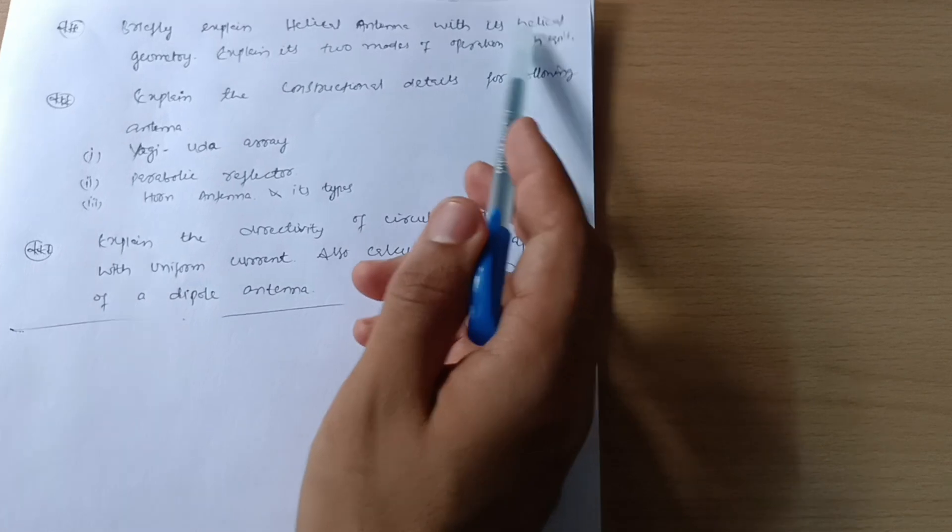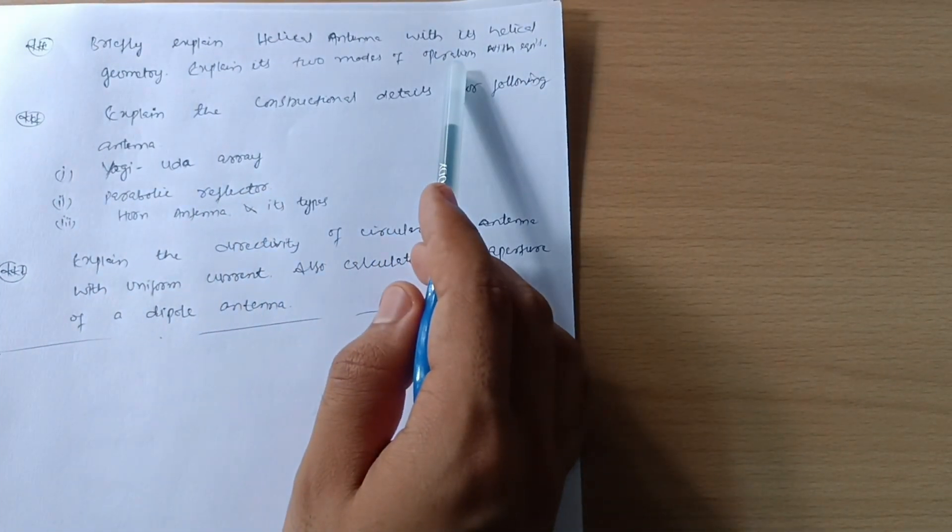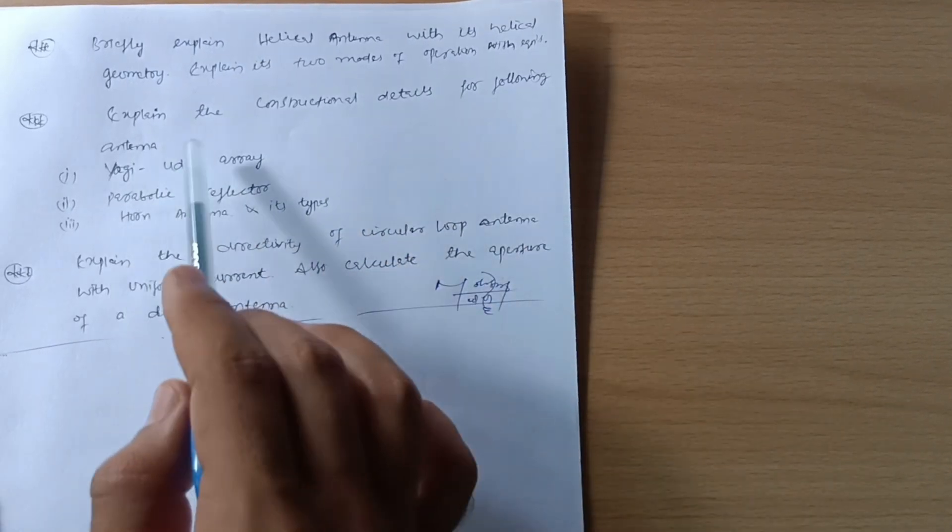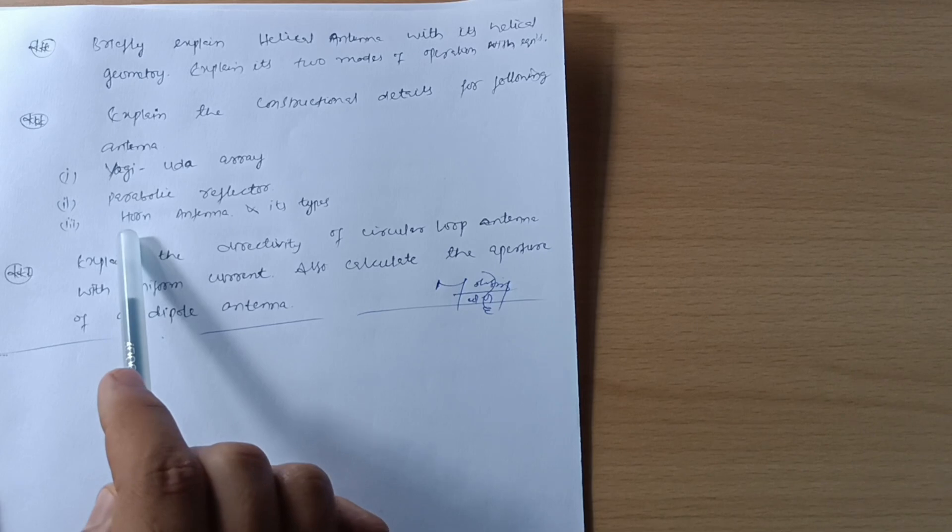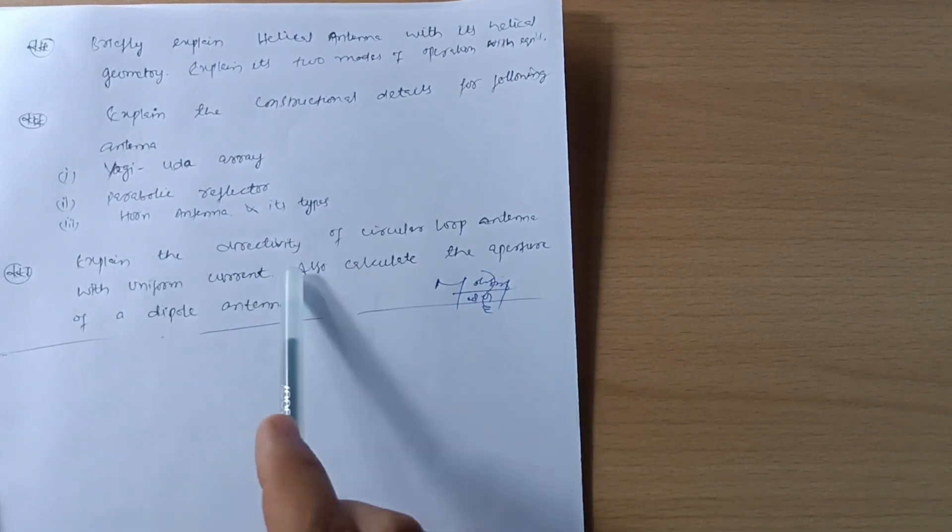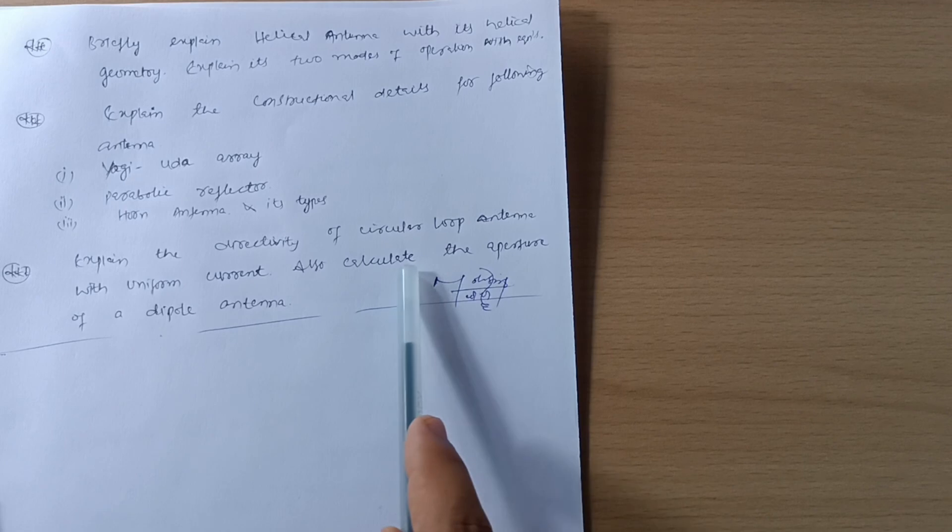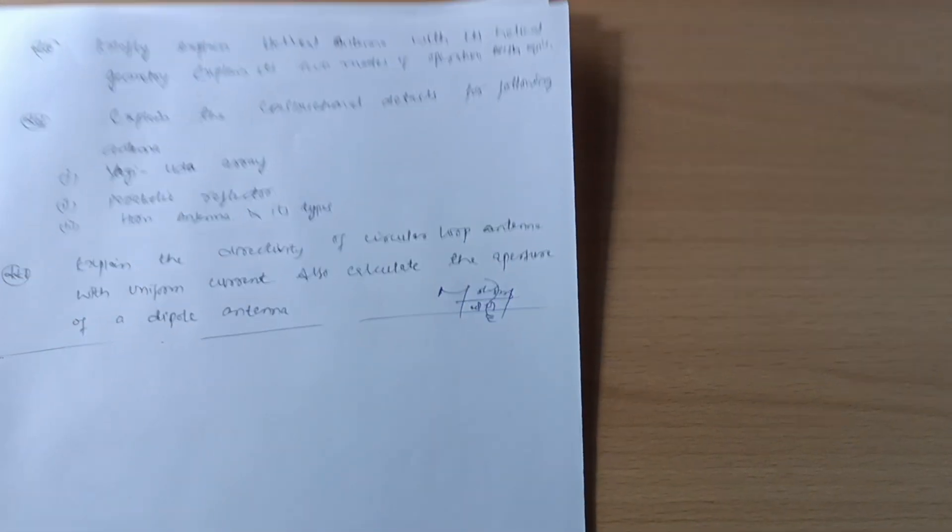Next is briefly explain helical antenna with its helical geometry. Explain its two modes of operation with the relevant equations. Explain the constructional details for following antenna: that is Yagi-Uda array and parabolic reflector and horn antenna types. Explain the directivity of circular loop antenna with uniform current. Also calculate the aperture of a dipole antenna. So these are all important questions model-wise.